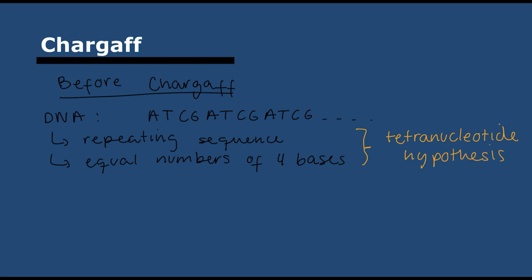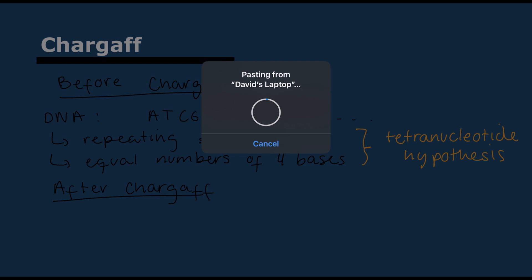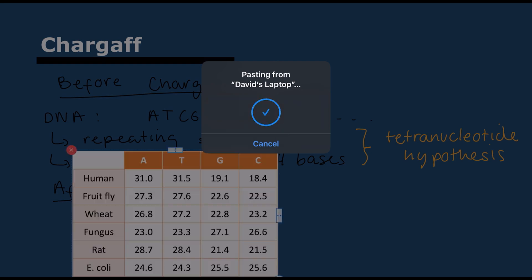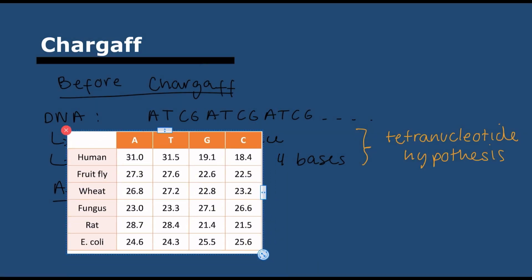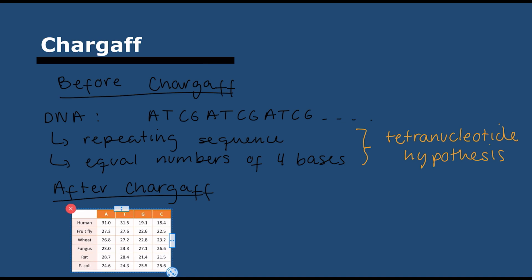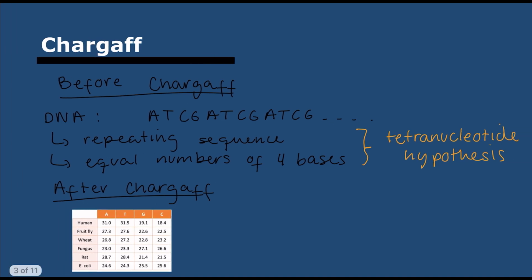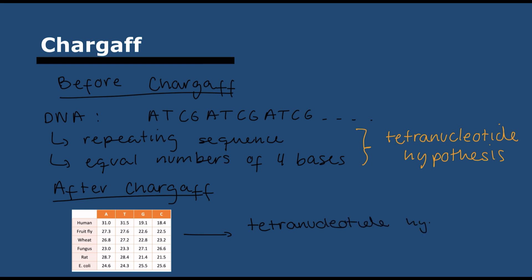That was called, very importantly, this is the keyword—the tetranucleotide hypothesis. But what Chargaff did is he looked at sequences of DNA in different organisms and realized it wasn't a 1:1:1:1 ratio. There were more quantities of some bases than others, so he falsified the tetranucleotide hypothesis. Simple as that.